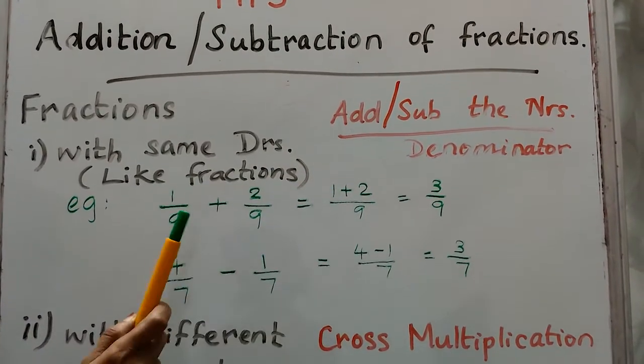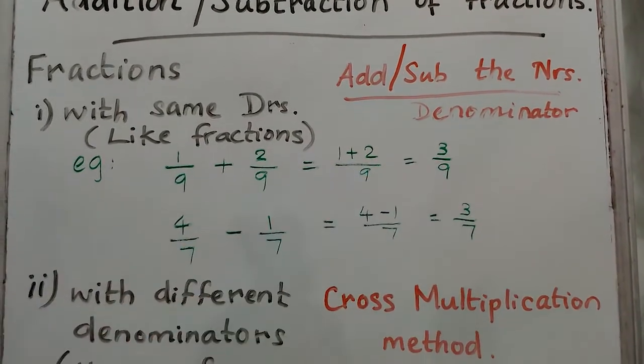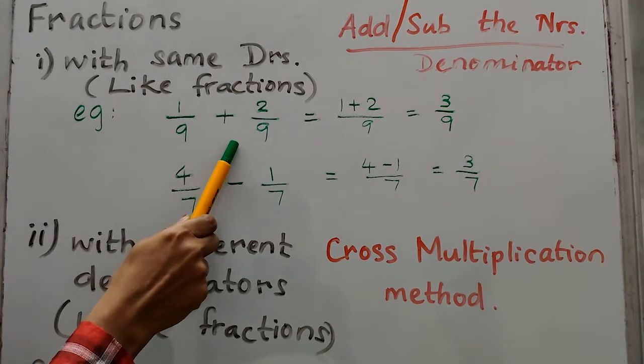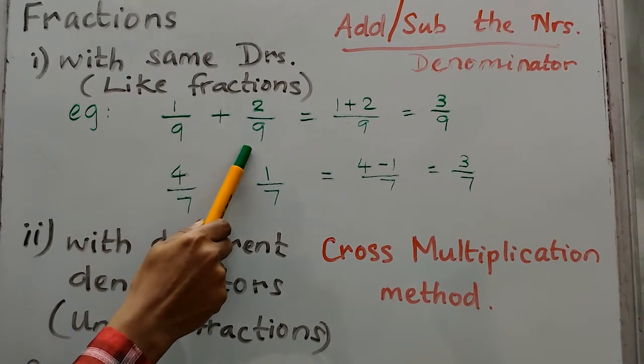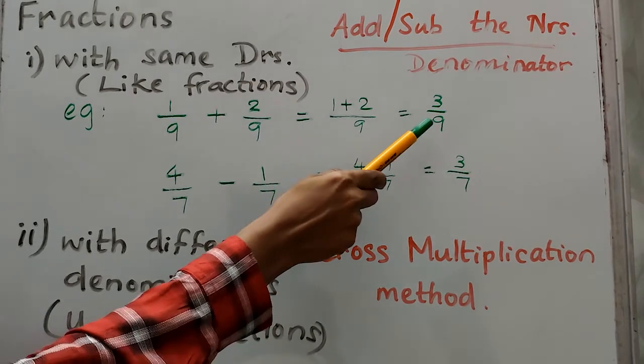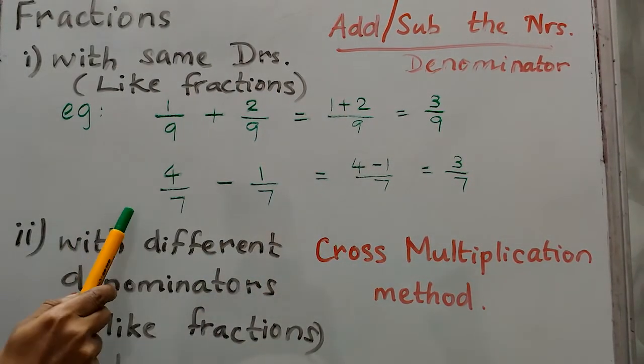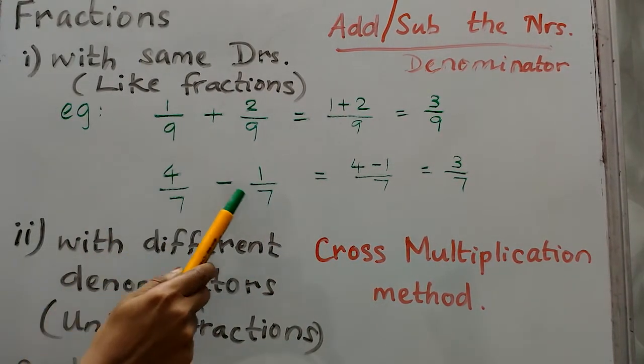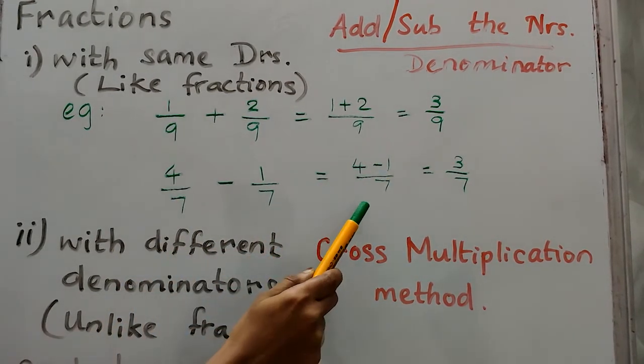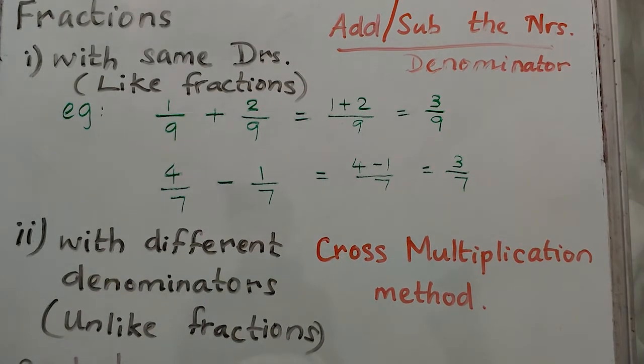The denominator stays the same. Example: 1 by 9 plus 2 by 9, denominators same, numerators add, 1 plus 2 by 9 equals 3 by 9. Subtraction: 4 by 7 minus 1 by 7, numerators subtract, 4 minus 1 by 7 equals 3 by 7.